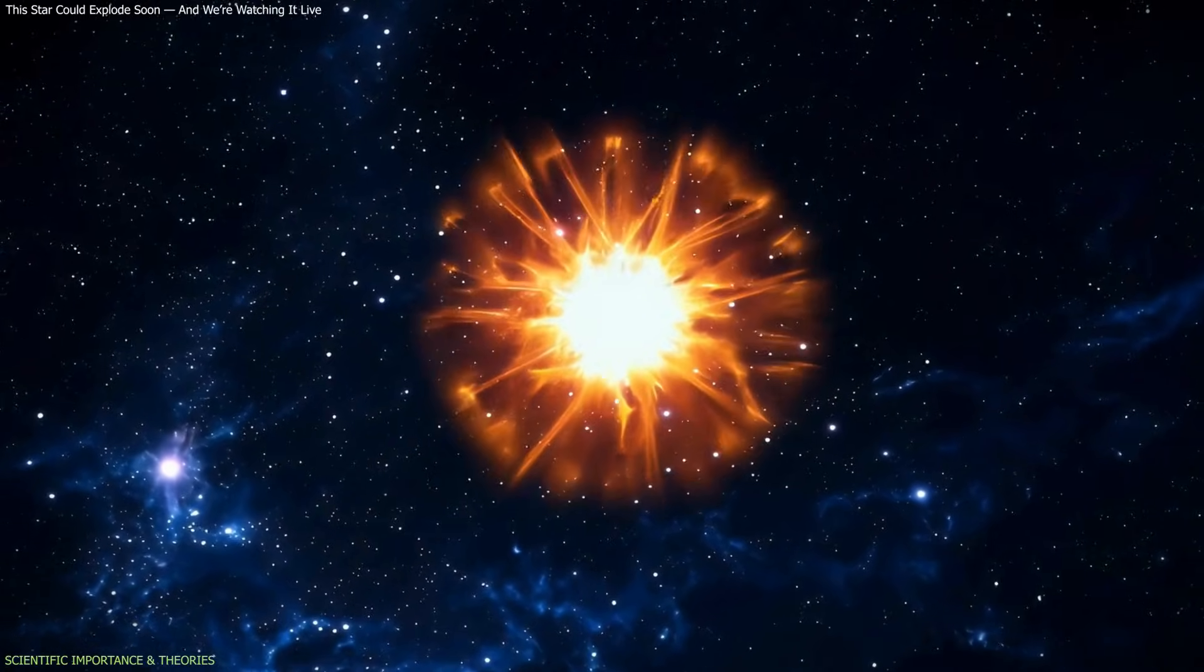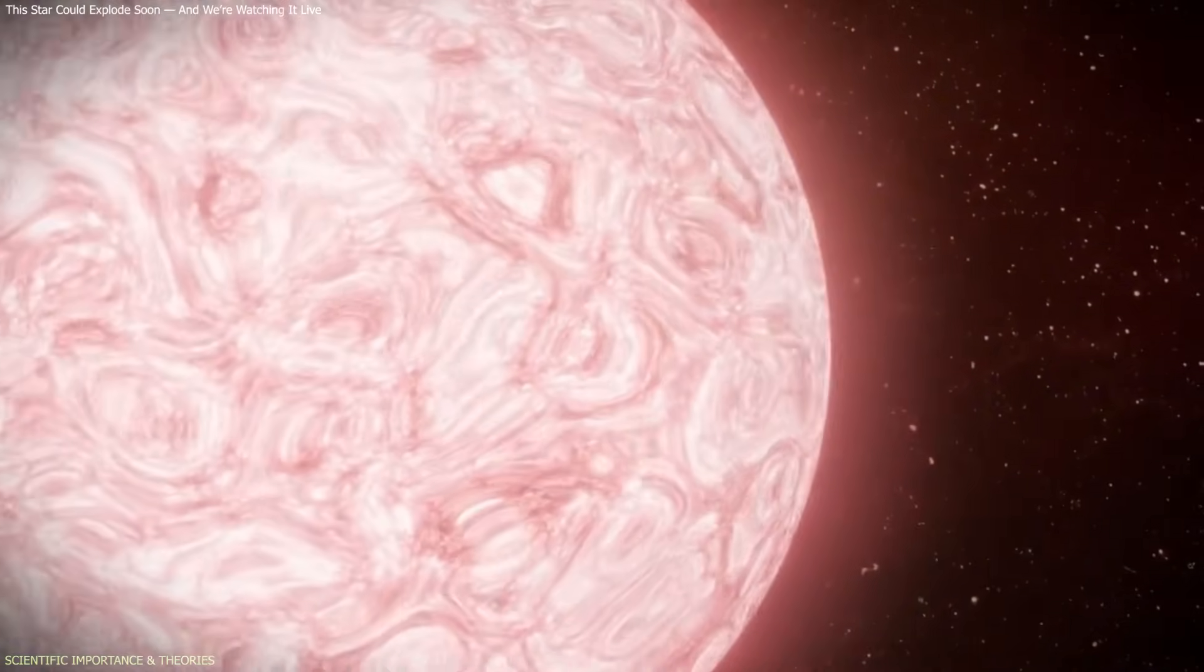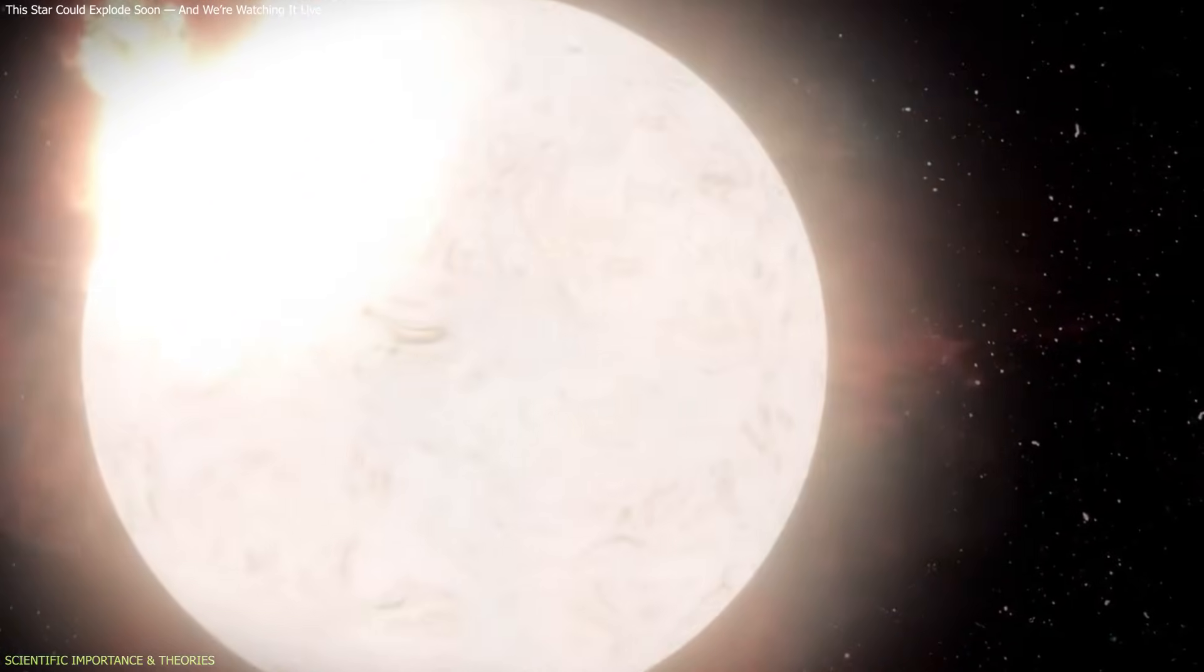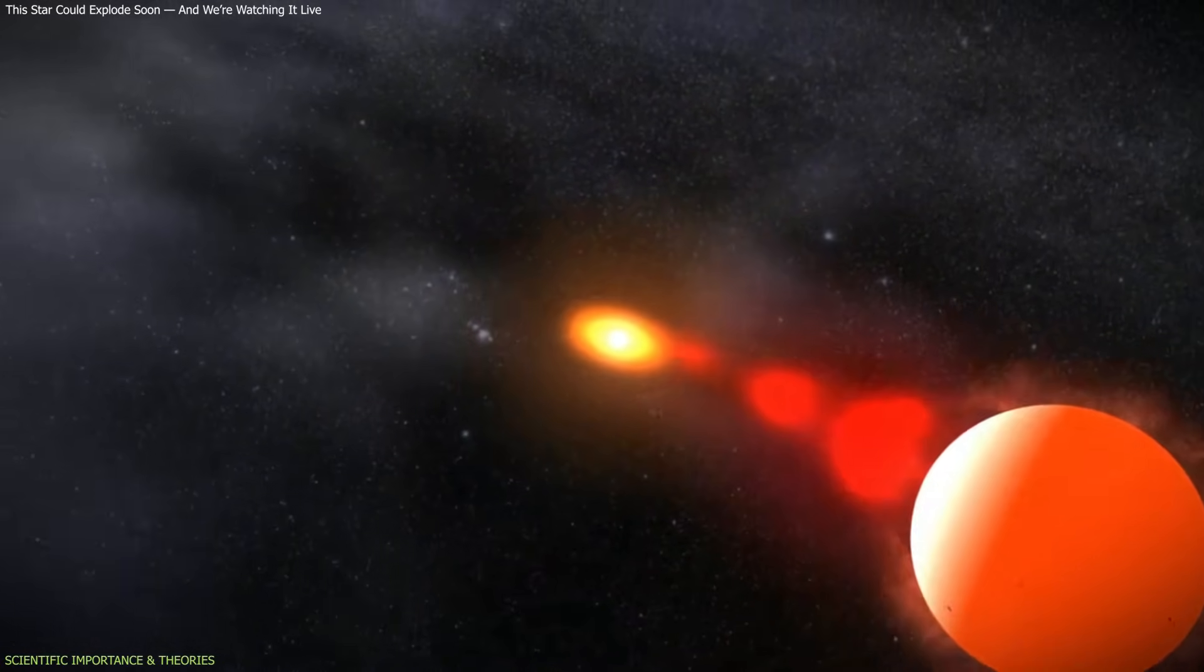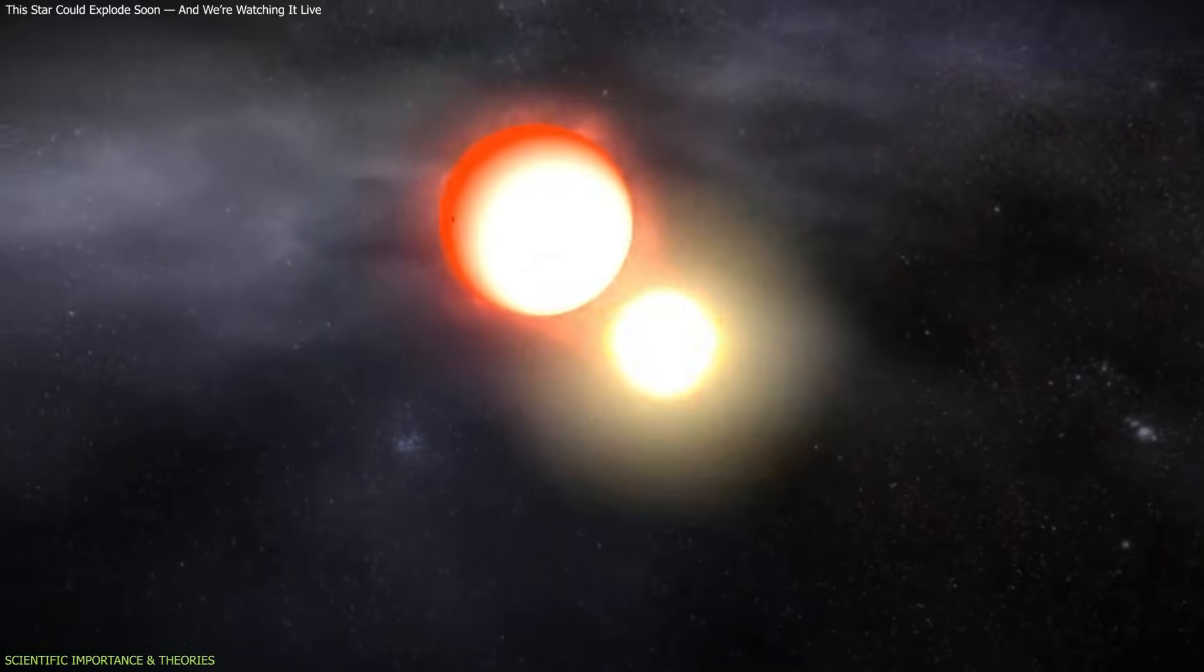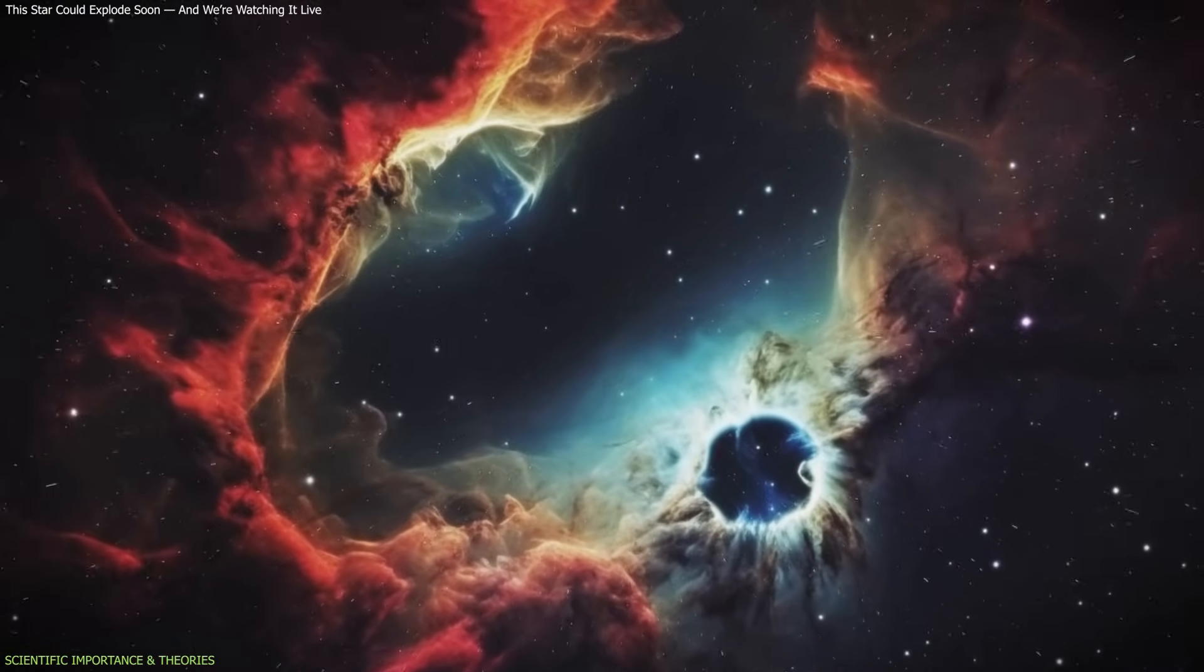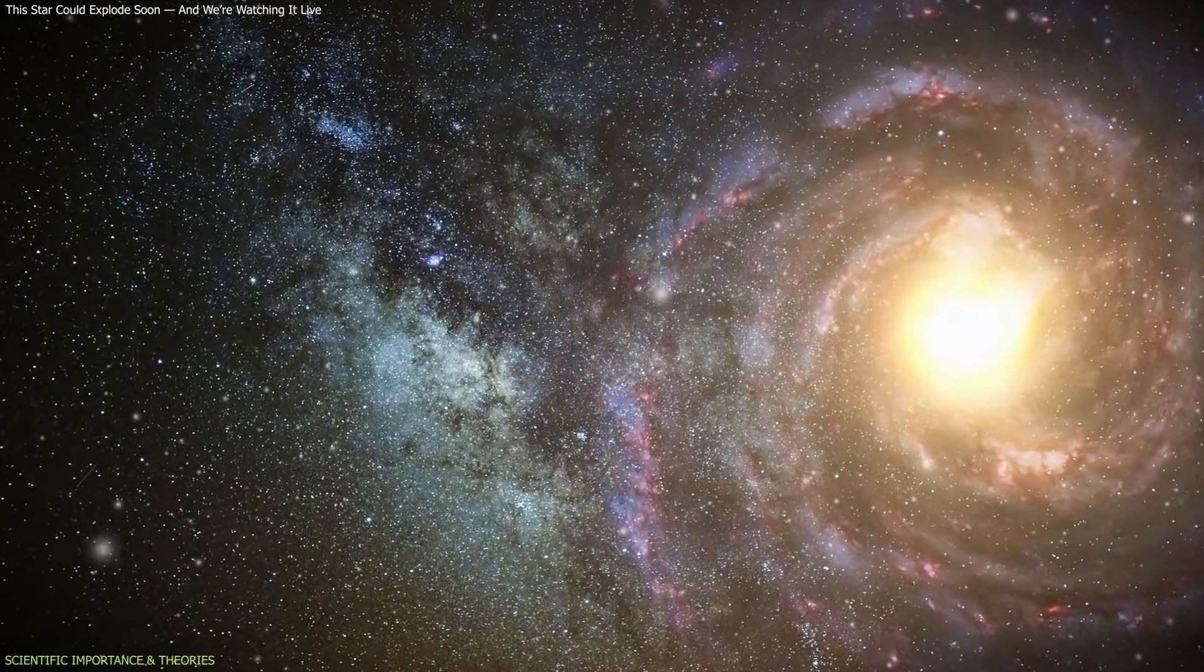Beyond the near-term nova scenario lies a more debated possibility. If the white dwarf gains sufficient mass over time, it could approach the Chandrasekhar limit – the maximum mass a white dwarf can support against gravitational collapse. Crossing this limit would trigger a catastrophic explosion comparable to a Type Ia supernova. Type Ia supernovae play a central role in astronomy. They serve as distance markers across the cosmos and were instrumental in the discovery that the expansion of the universe is accelerating.